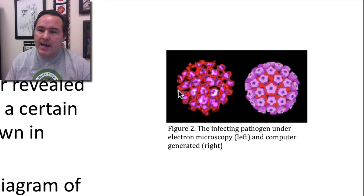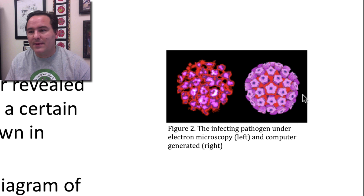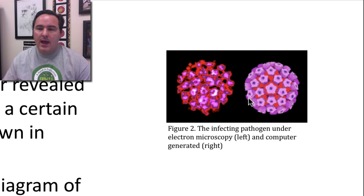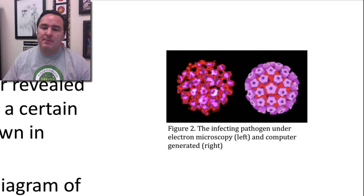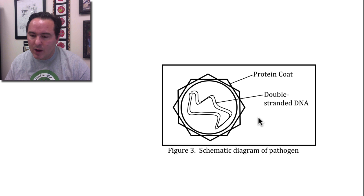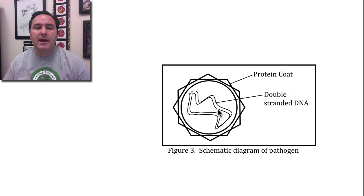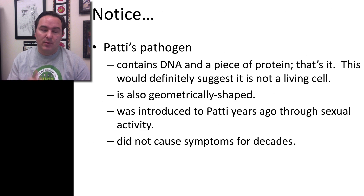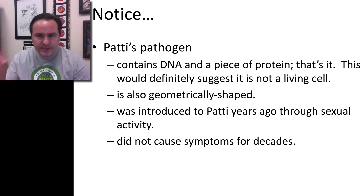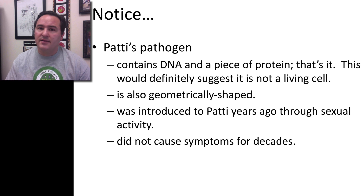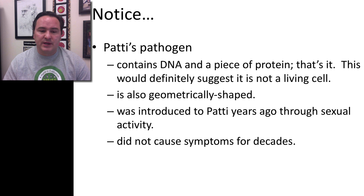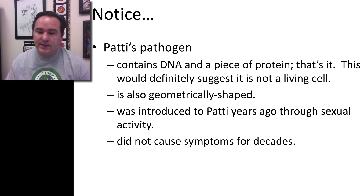Here's a scan of what that was, and a recreated structure of what this pathogen looked like — kind of spherical. After continuing to analyze this further, here's a diagrammatic drawing of some of the important parts of this pathogen: it had a protein coat on the outside and double-stranded DNA on the inside. What should we notice? It contains DNA instead of RNA like the last one. It also contains some protein, but that's it — no ribosomes or anything else. This would definitely suggest it's not a living cell. It had a geometric shape and was likely introduced into Patty many years ago during sexual activity, then did not cause symptoms for many decades.